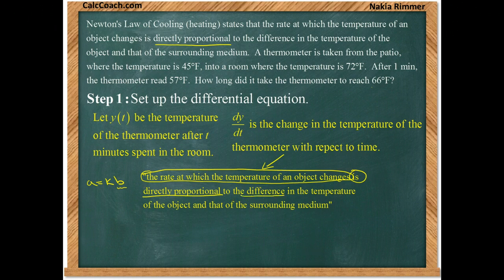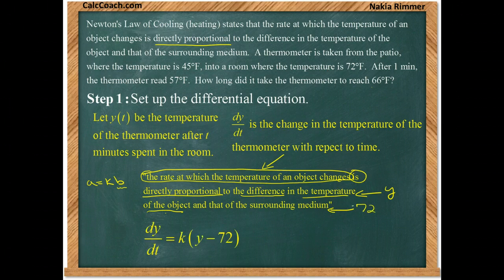So dy/dt is going to be some constant K times what comes after the words 'directly proportional,' and here we have a difference, the difference between two temperatures: the temperature of the object, that's Y, and the temperature of the surrounding medium, the room temperature. For us that's a constant, the room temperature is 72 degrees. So we get this equation: dy/dt = K(Y - 72).